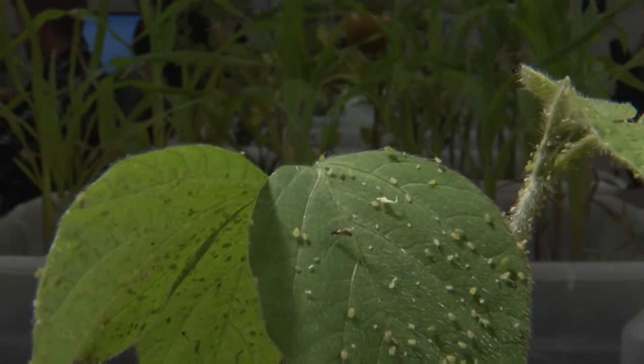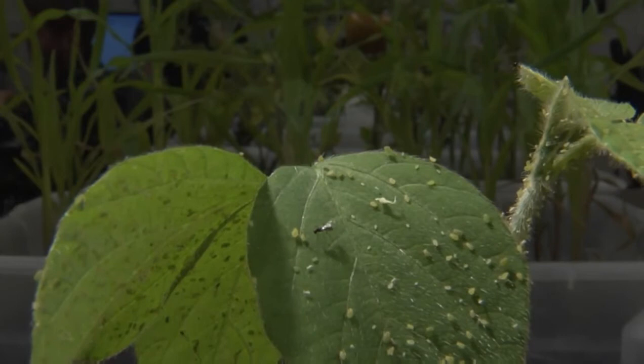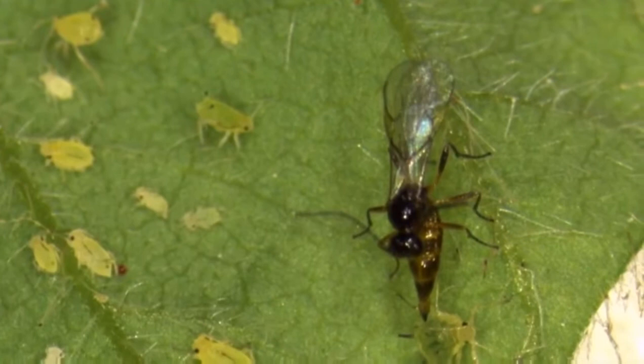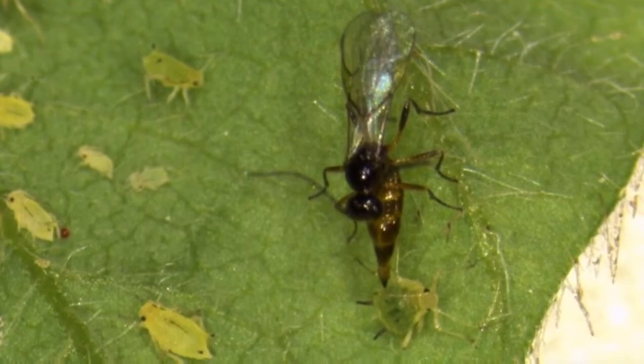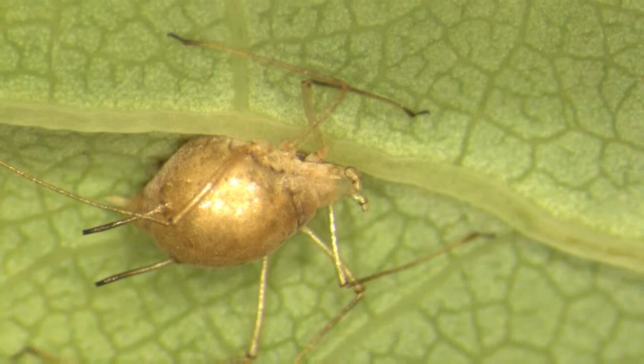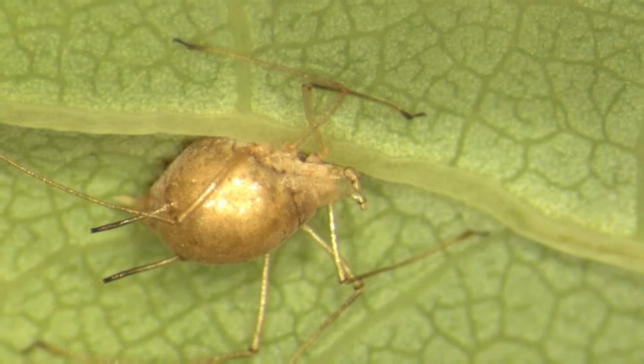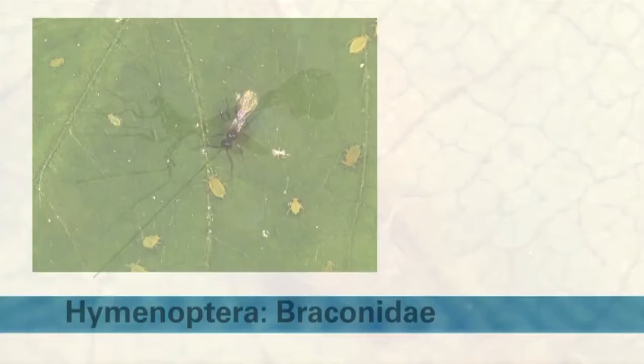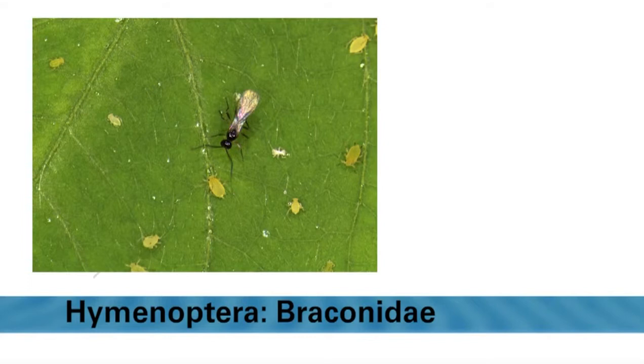Another common and important family of parasitoid wasps in vegetable crops are the Braconidae. These wasps are often black in color and range in size from 1/8th to 1/4 inch in length. Many braconid wasps attack aphids. Adult female braconids use their ovipositor to inject an egg into the aphid. The larva develops inside the host, eventually killing it. The larva pupates inside the aphid carcass, which is transformed into a swollen, hard shell called an aphid mummy. An adult wasp will emerge from the aphid mummy by chewing an exit hole. In addition to aphids, braconid species attack caterpillars such as the imported cabbageworm and tobacco hornworm.